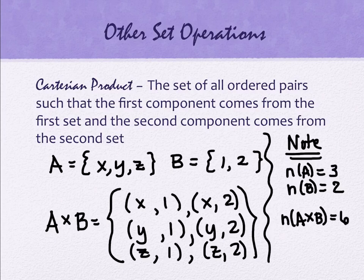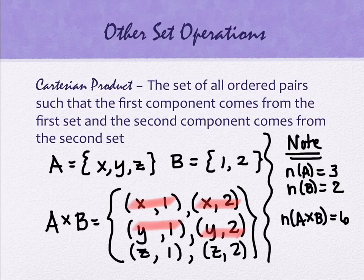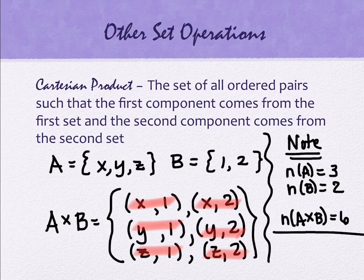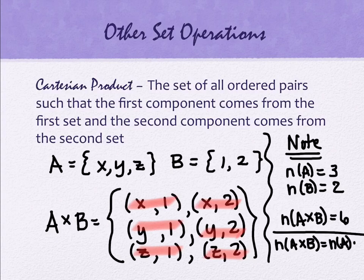What is the number of items in their cross product? It's six. Remember, it's the ordered pairs. One, two, three, four, five, six. There's six ordered pairs. What's the relationship here? There's a multiplication relationship. The number of items in A cross B is the number of items in set A times the number of items in set B.